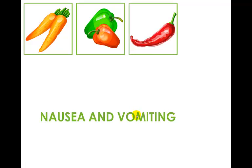Nausea and vomiting and constipation and diarrhea — that's what we're going to talk about in this PowerPoint. You can look up what's going on with nausea and vomiting, some of the things that we need to assess, the causes — is it another medication, is it a disease process that's going on, is it causing other problems like sores in the mouth, malabsorption, altering the hydration status, altering the electrolyte status. Look at onset, duration, frequency — all of those things.